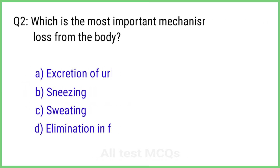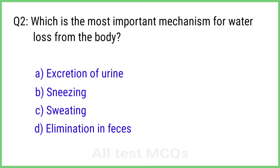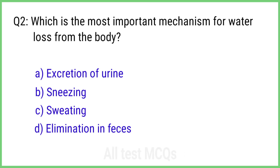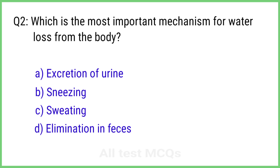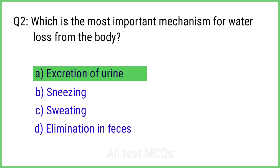Question 2. Which is the most important mechanism for water loss from the body? The right answer is option A: Excretion of urine.